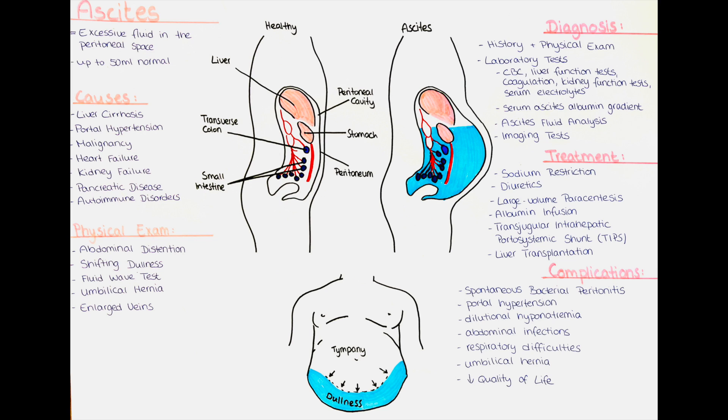Shifting dullness is a classical physical finding in ascites. With the patient lying flat, percussion of the abdomen produces a dull sound over the dependent areas where fluid accumulates. When the patient is turned onto their side, the fluid shifts and percussion produces a resonant sound over the previously dull areas.